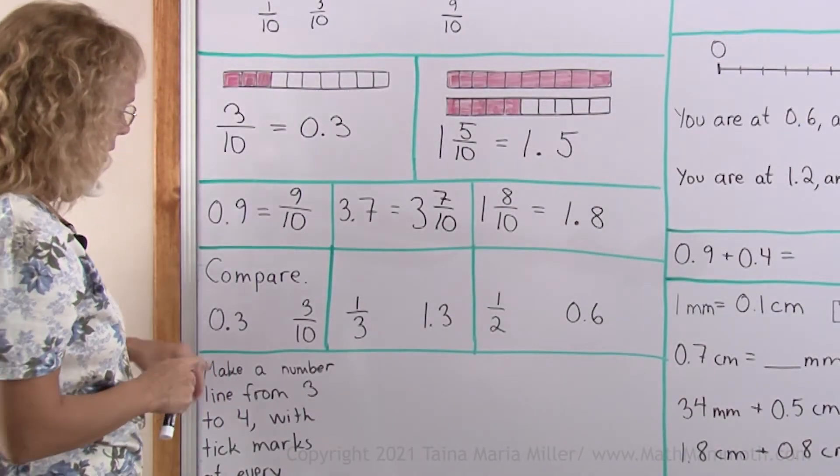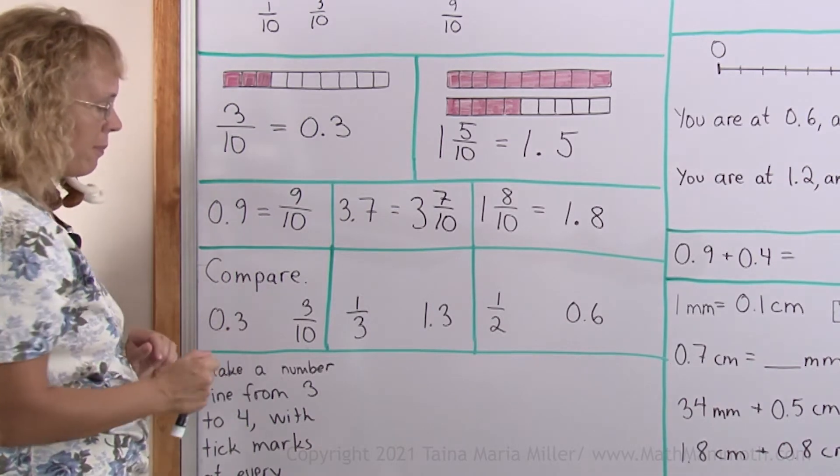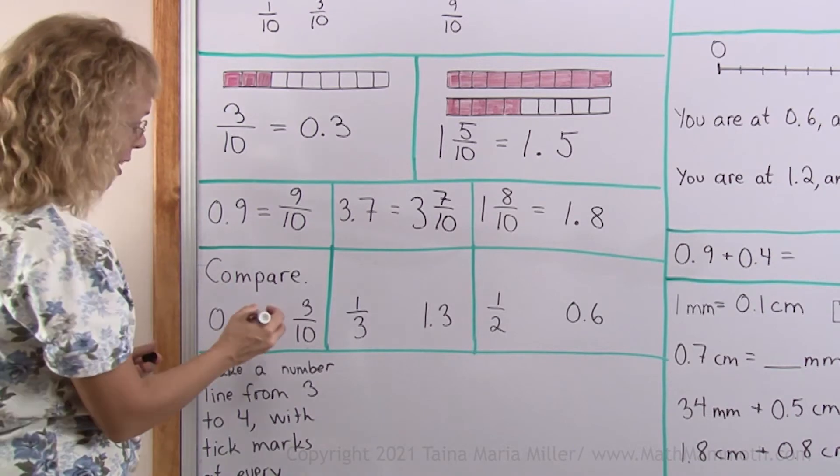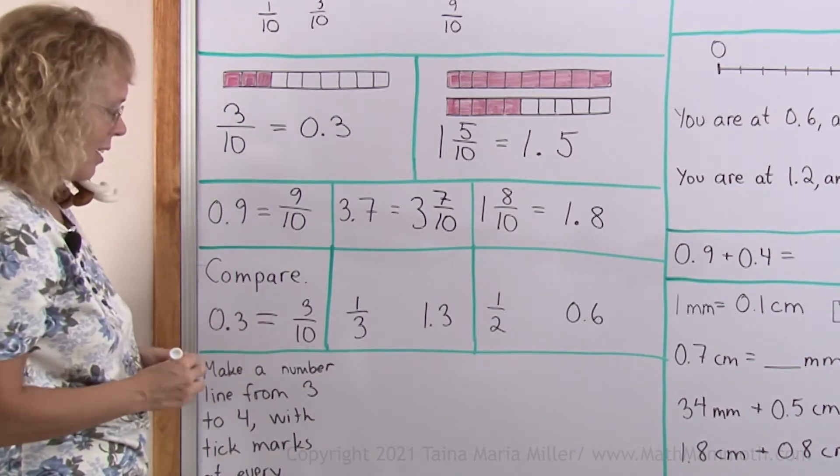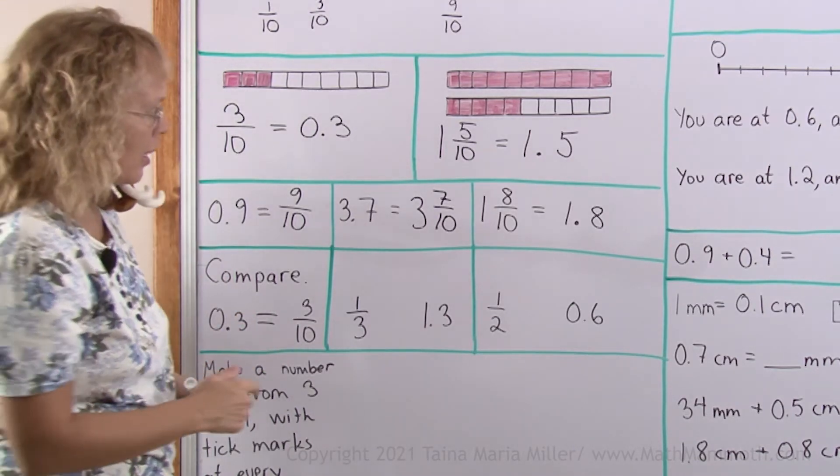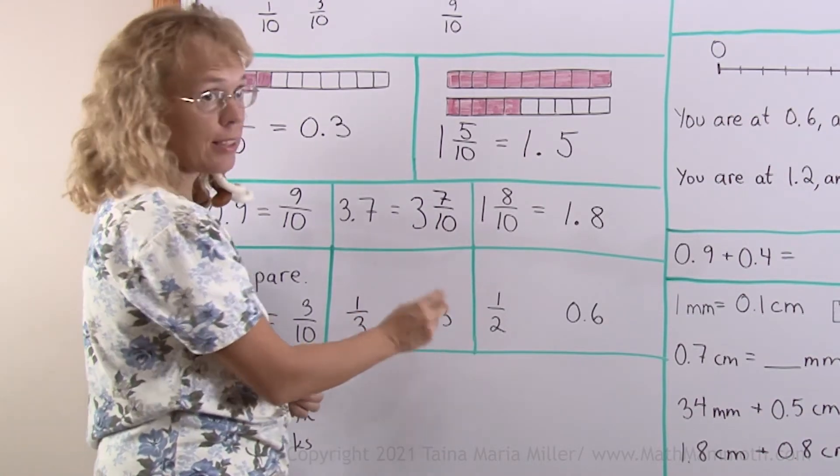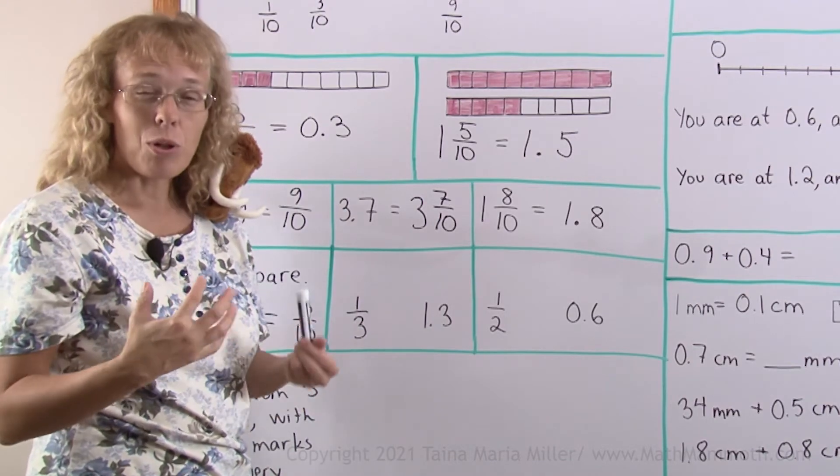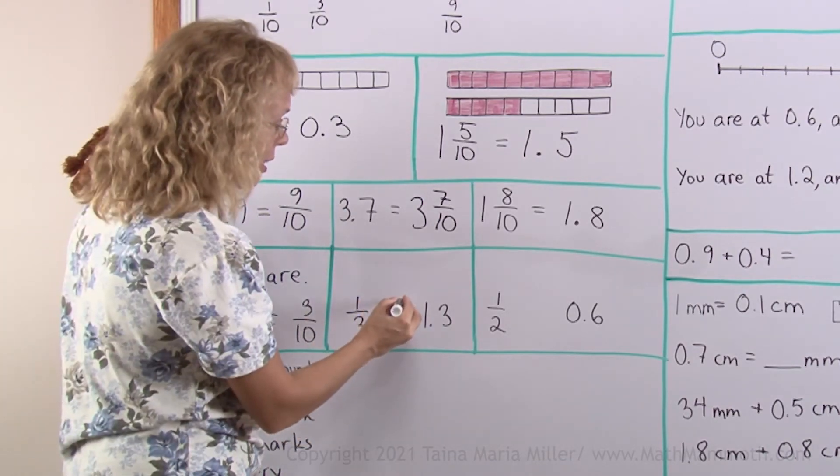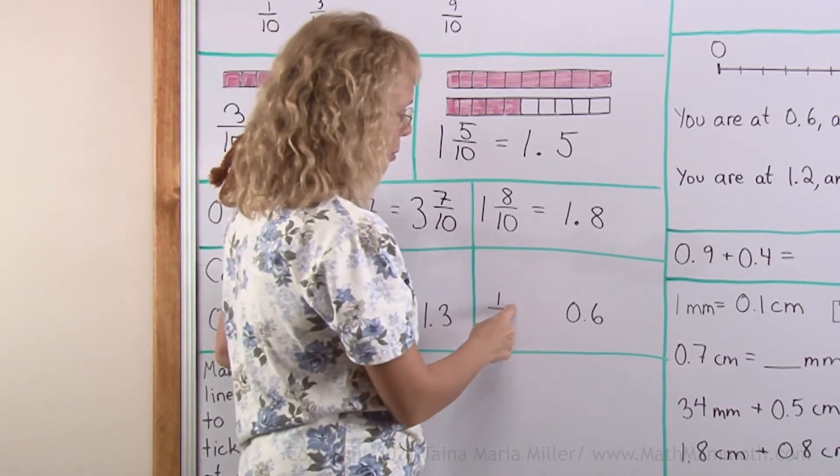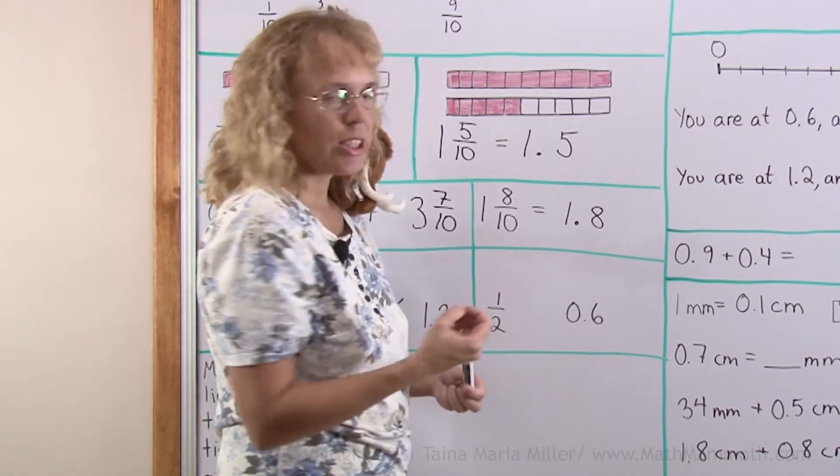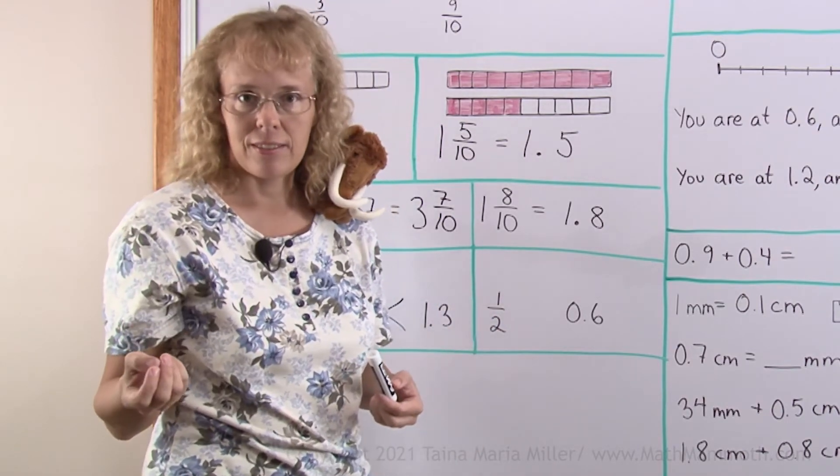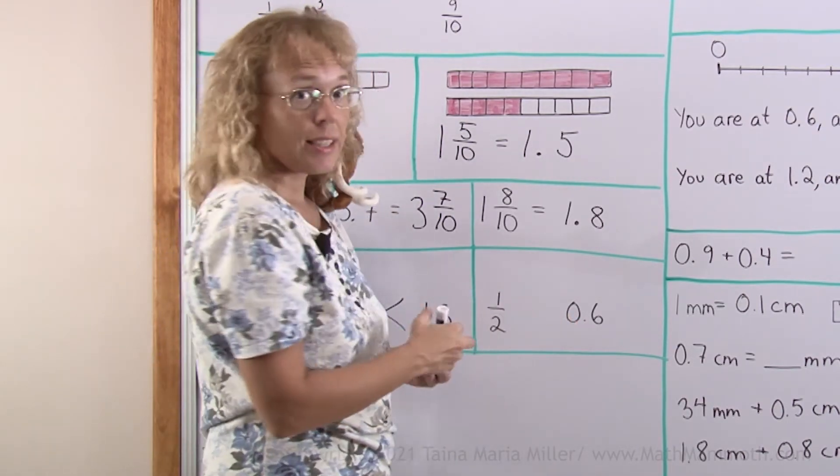Let's compare now. Here I have 0.3 and 3/10. Which one is more? Well that's actually a trick question because they are equal. Here I have 1/3 and then 1.3. Now this number has 1, it is more than 1 whole, so obviously it is more than just 1/3. Here's 1/2 and 0.6 which is 6 tenths. Now 1/2 would be equal to 5/10, so 6/10 is more.